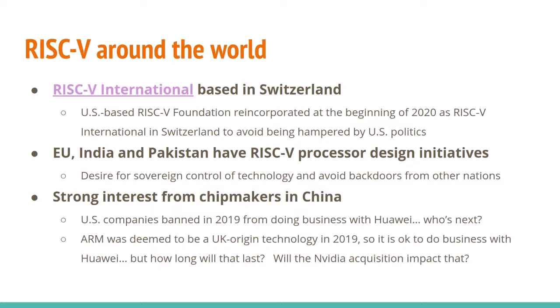There's also strong interest from chip makers in China. US companies were banned in 2019 from doing business with Huawei. Other Chinese companies are probably wondering who is next in terms of restrictions. ARM is deemed UK-origin technology, so it was okay to do business with Huawei — but how long will that last, and how will the NVIDIA acquisition impact things? That uncertainty is driving more companies to look at RISC-V as a way to reduce uncertainty in their technology roadmaps.